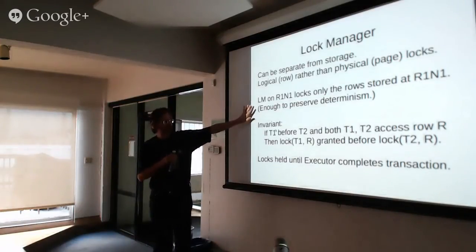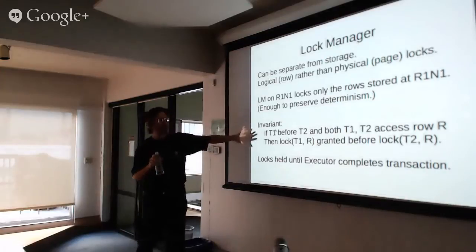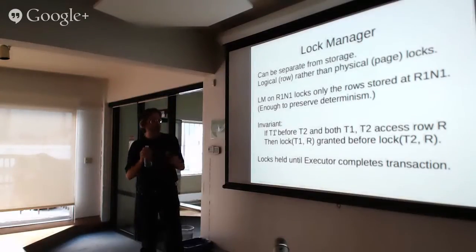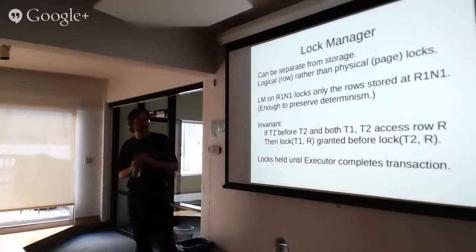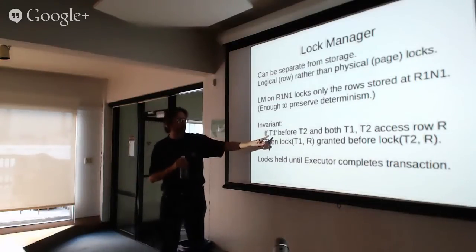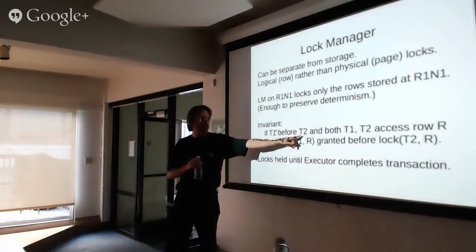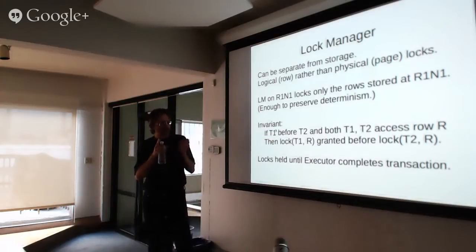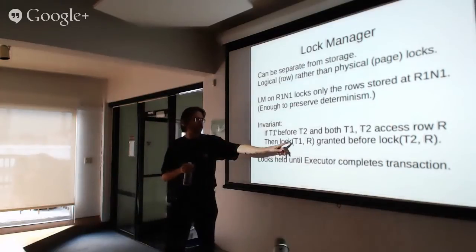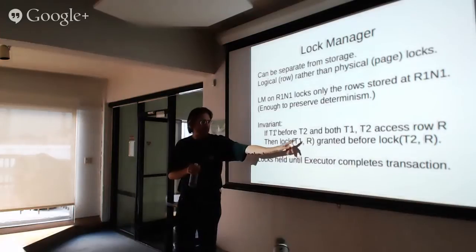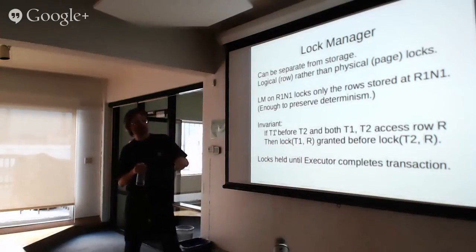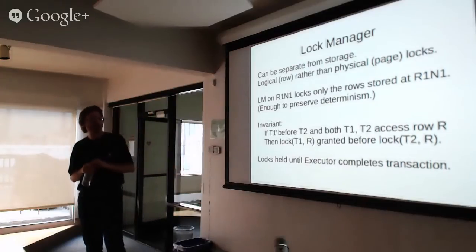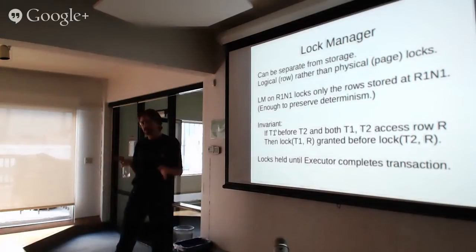To preserve determinism, the lock manager itself has an invariant. We translate the whole system's invariant into one that applies just to the lock manager: if we want execution equivalent to deterministic order T1, T2, T3, then the lock manager must ensure that if T1 comes before T2 and they both touch some row, then when T1 is granted a lock on that row, that must happen before T2 is granted a lock on it. T1 must release the lock before T2 takes it. So locks are granted and released in the same sequence as the transactions appear in the MetaLog.